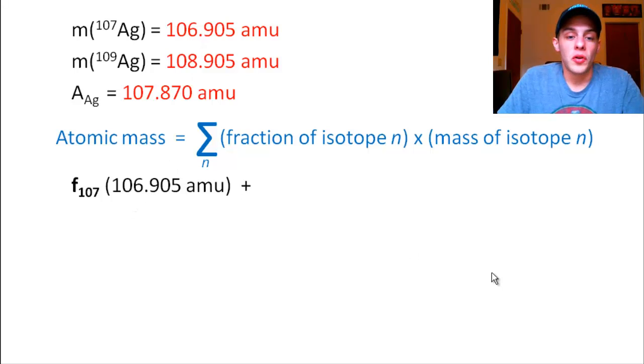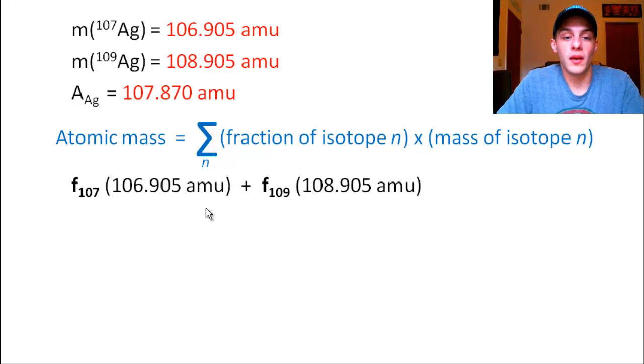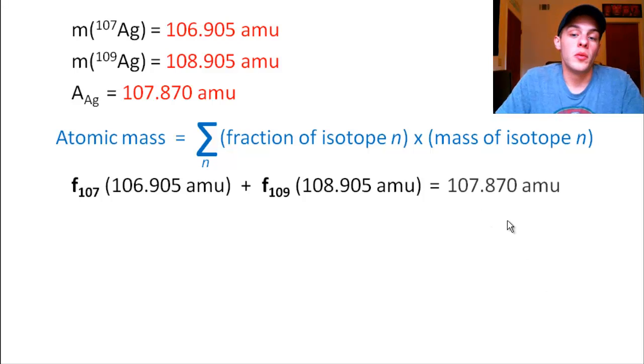And we're going to add to that the same term for silver-109, the fraction of silver-109 times its respective mass, 108.905 amu. So it says the summation of these two terms is equal to the atomic mass of the element, which for silver is 107.870 amu.